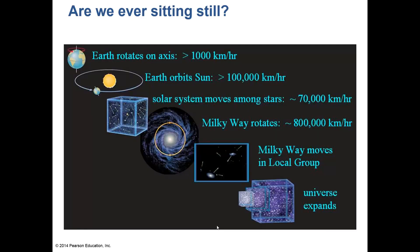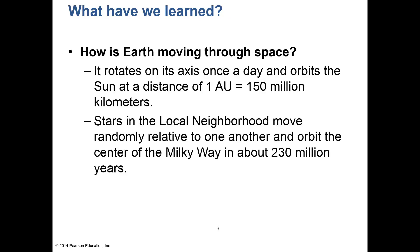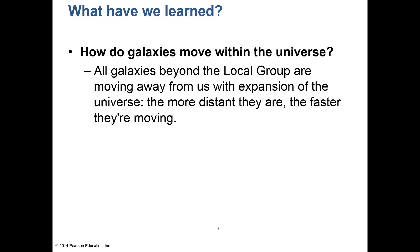Here are Earth's motions: Earth rotates on its axis, Earth orbits the Sun at one AU, the solar system moves around other stars, the Milky Way rotates at about 800,000 kilometers per hour taking 230 million years per rotation, the Milky Way moves through our local group, and the universe expands. All galaxies beyond the local group are moving away from us, and the more distant the galaxy, the faster that speed — Hubble's law.